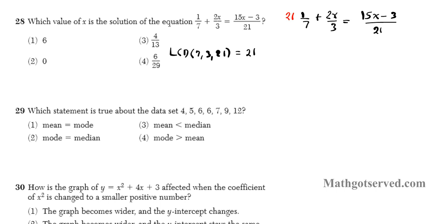So times this by 21, times this by 21, times this by 21. The first term, 7 goes here once, 7 goes here 3 times. Here, 3 goes here once, 3 goes here 7 times. And then over here, the 21s just cancel out. So now we have 3 plus 2x times 7 is 14x equals 15x minus 3.